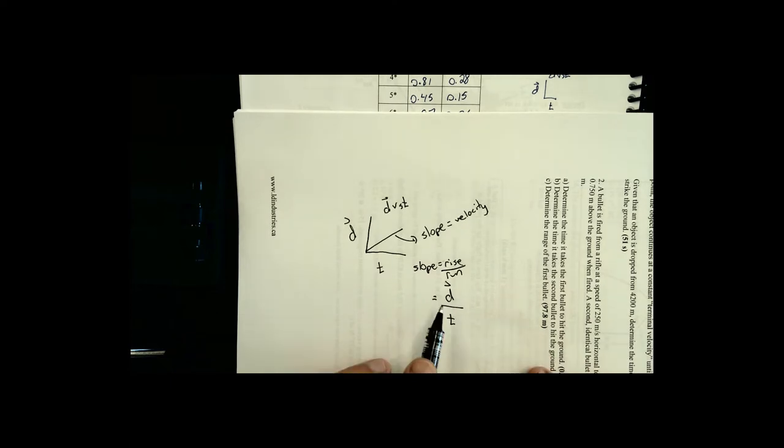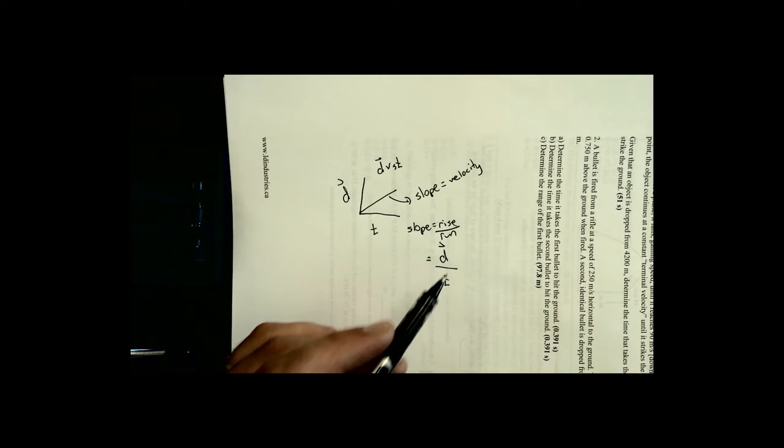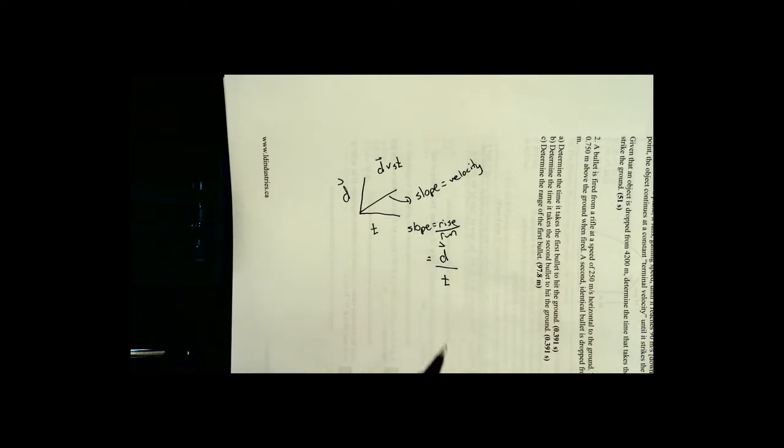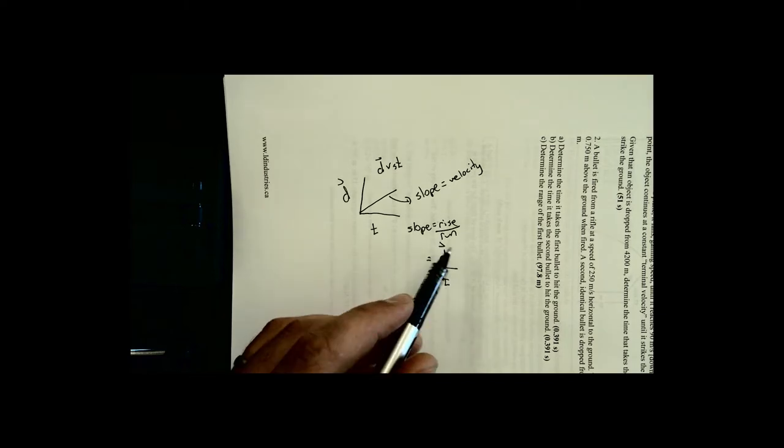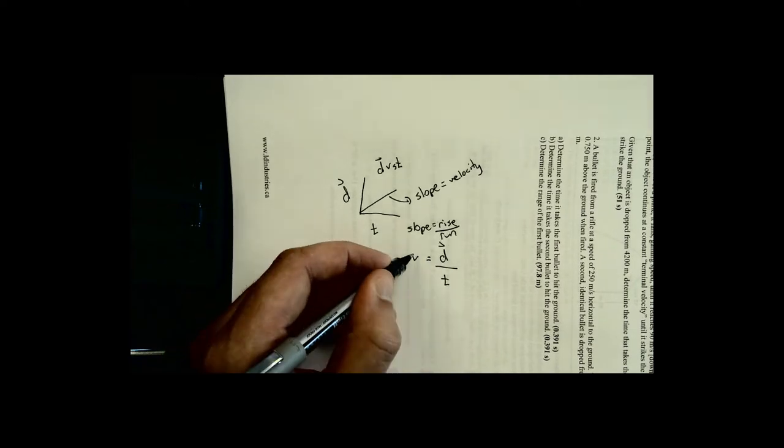And so what you end up getting here in the slope formula is like a little piece of algebra, I usually call it, a little piece of algebra which just happens to match up with a physics variable we know about. So do you know of an equation that has d over t on one side? It's v equals d over t right off your formula sheet.